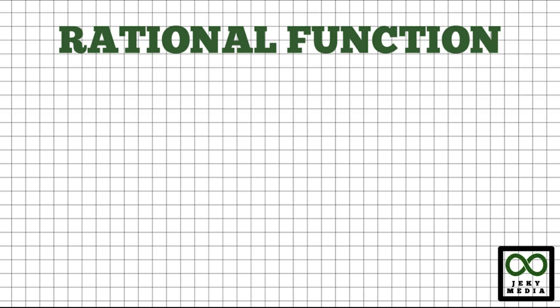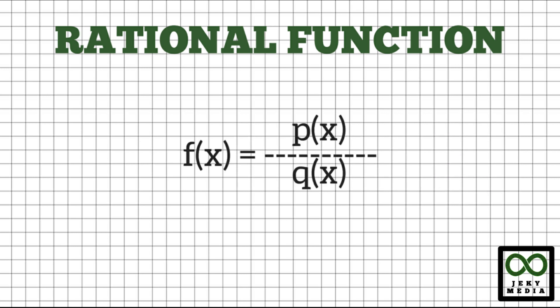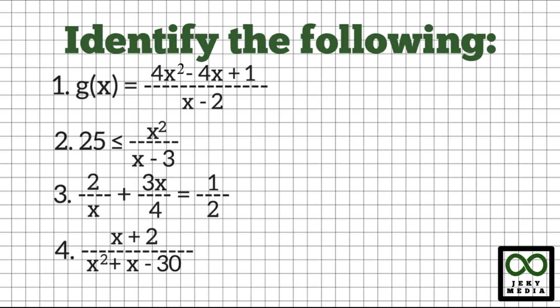Lastly, rational function. A rational function is a function which contains polynomials on the numerator and the denominator. This is represented by the function f(x) equals p(x) divided by q(x), where q(x) will not be equal to 0. For example, the quotient function of x squared minus 2x plus 1 divided by x minus 2. Let's identify the following.